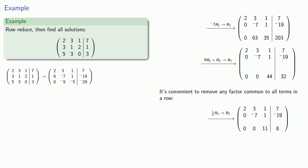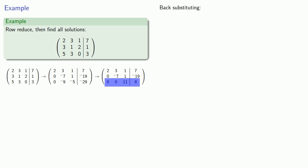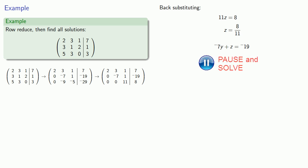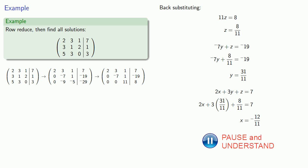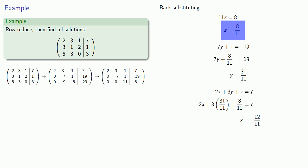And now our matrix is in row echelon form and we can solve using back substitution. Beginning with the last row, which corresponds to the equation 11z equals 8, we solve z equals 8 elevenths. The next to last row corresponds to the equation negative 7y plus z equals negative 19. We know the value of z, so we'll substitute that in and solve for y. The first row corresponds to the equation 2x plus 3y plus z equals 7. We'll substitute in our values for y and z and solve for x. This gives us our solution x equals negative 12 elevenths, y equals 31 elevenths, and z equals 8 elevenths, which we'll write in vector form.